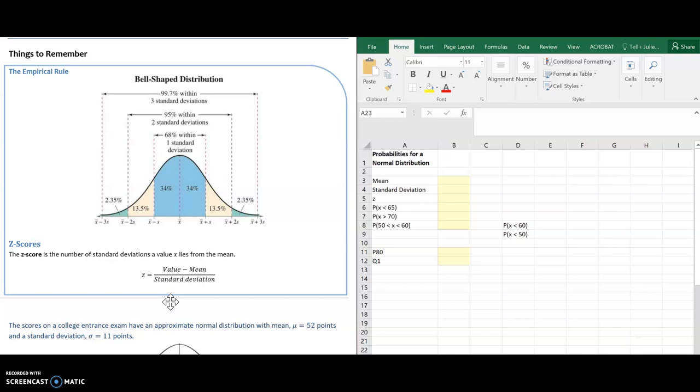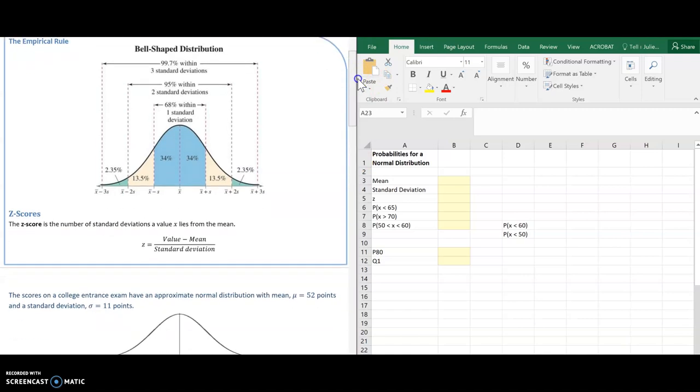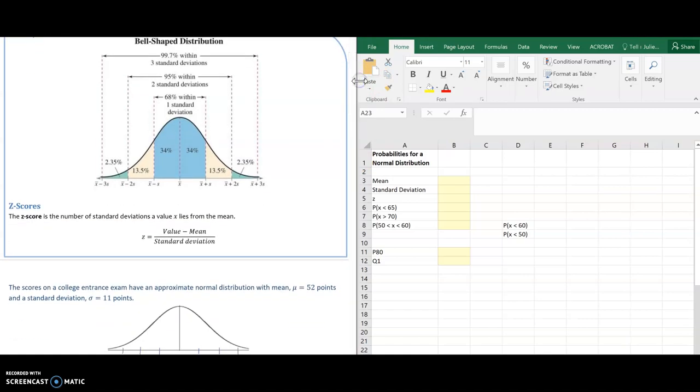First thing I'm going to do is create this normal curve like the one we see for the empirical rule. Here's a normal curve, and that line in the middle is where the mean always goes. If I take that 52 and add 11 to it multiple times, then I will get each value to the right.